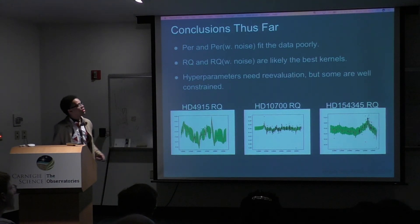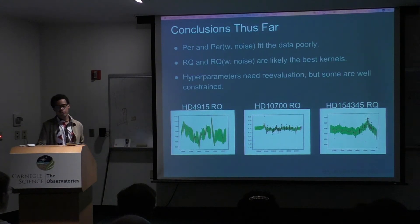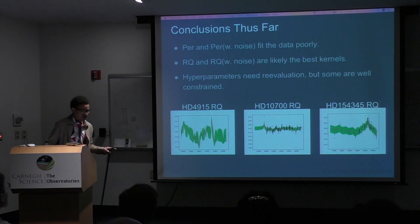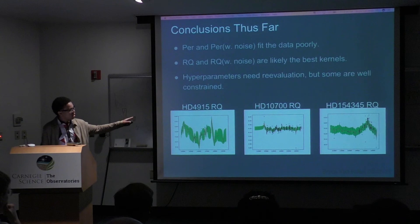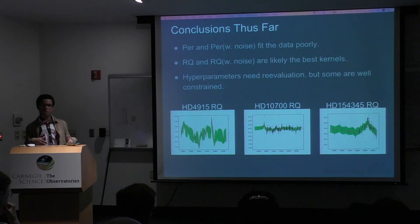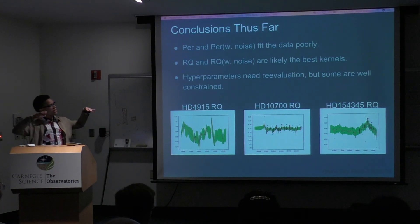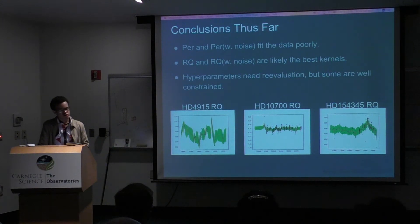Our final conclusions: periodic and periodic with and without white noise were the worst fits for our stars. Rational quadratic with and without white noise seem to be the best fit so far. Squared exponential for the star with the least data points actually proved to be the best or second best. What's really interesting is that rational quadratic is basically a superkernel — a combination of a bunch of squared exponential kernels combined together with varying length scales. We're still evaluating our hyperparameters, as some are more constrained than others, and we're still trying to understand their physical interpretation.